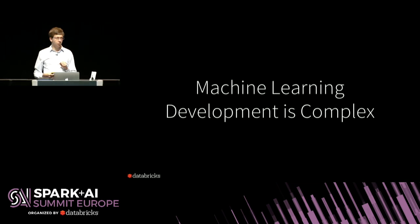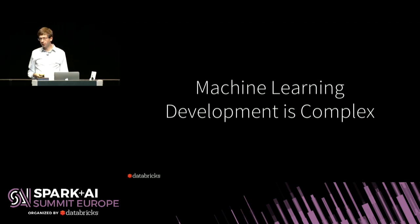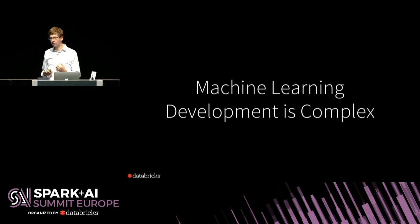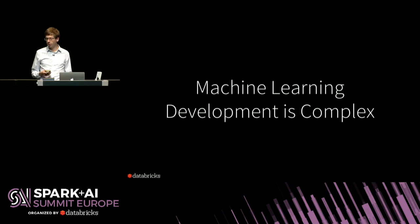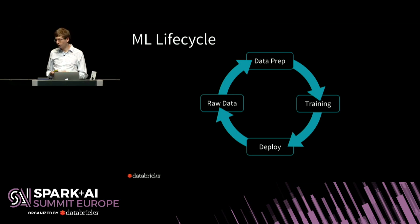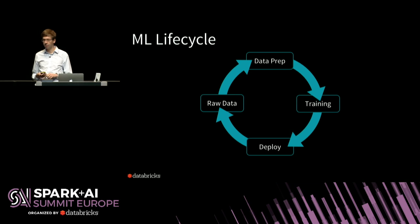Everyone who's tried to do machine learning development has quickly realized that it is complex. There are a lot of issues you have to think about and deal with in machine learning that don't happen in a normal traditional software development lifecycle, and these issues can easily consume the majority of your effort trying to build a production system.